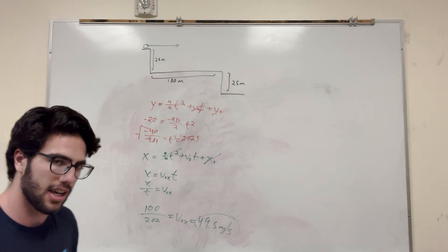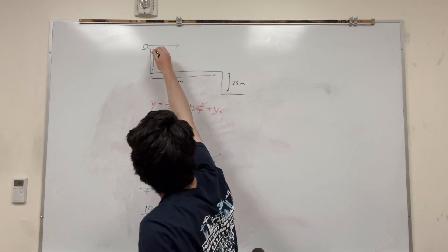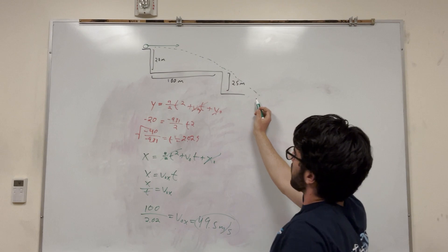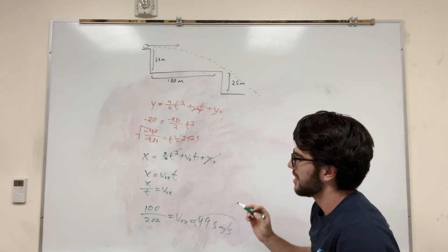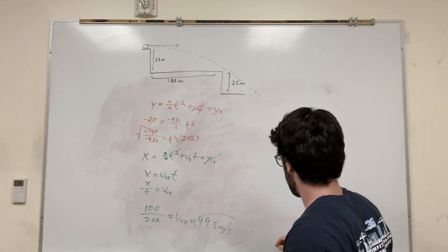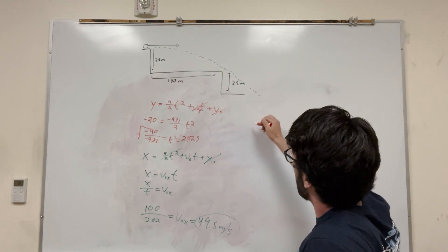So part B asks basically how far past it. So our object, it's going to look something like this. It's going to go down, and then it's going to clear, but it's going to keep going, and it's going to see how far down this 25-meter section is it going to land. So let's do that again. We need to basically run over all the steps again. So how long is it going to take to fall? Let's run back to our equation, which we have here.